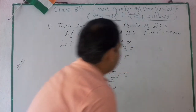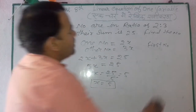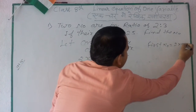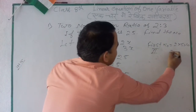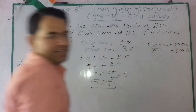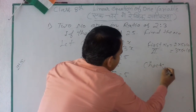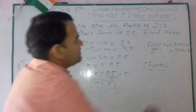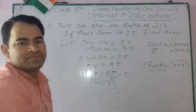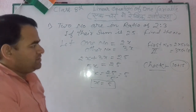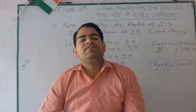Now we put this value in: the first number is 2 into 5, which equals 10. The second number is 3 into 5, which is 15. Now let's check: the total of both is 10 plus 15, which equals 25. This verifies our answer. So this is also a single variable linear equation, a linear equation of single variables.